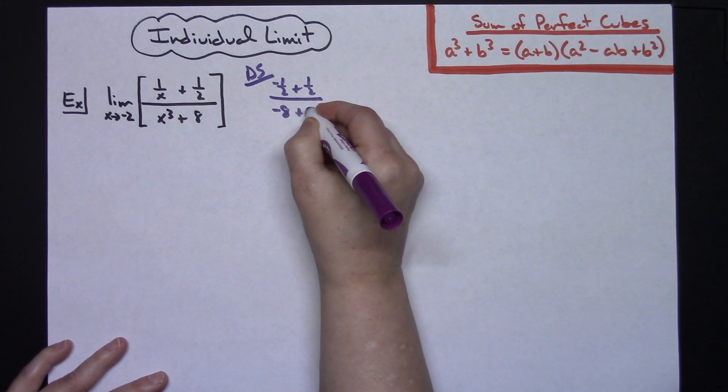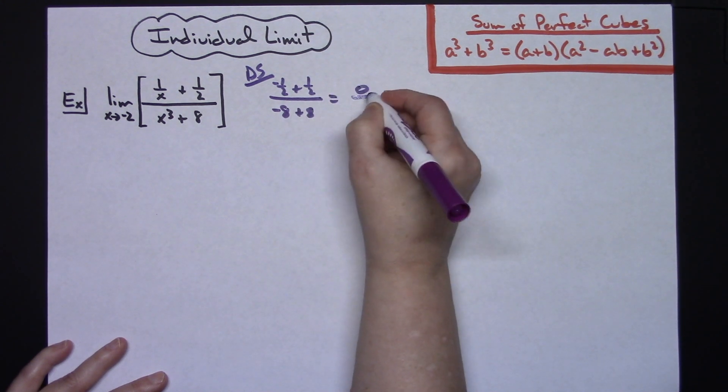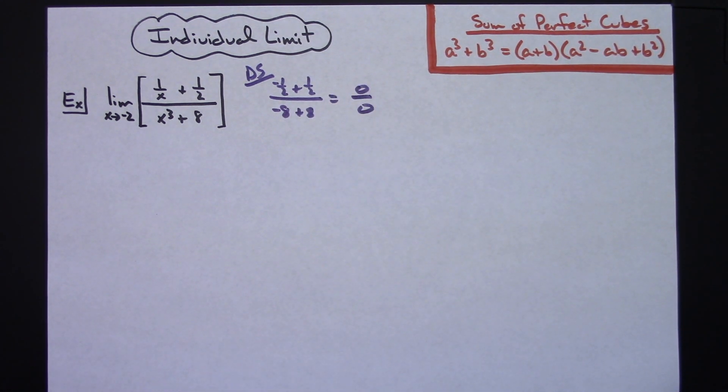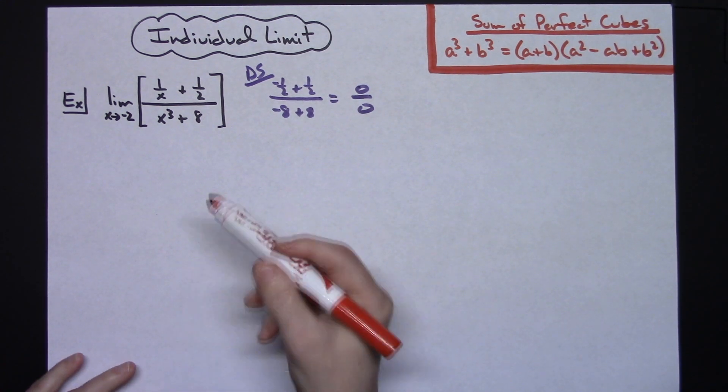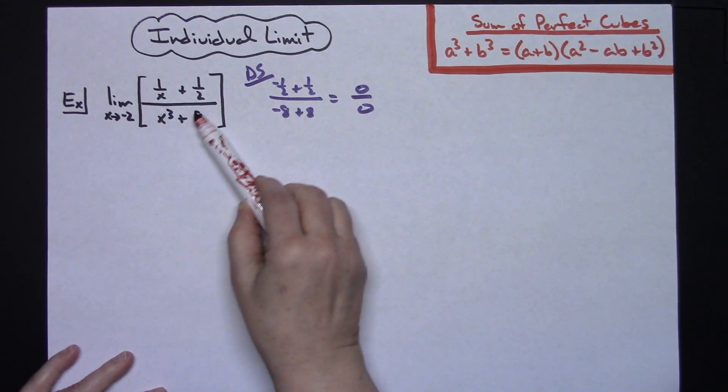If I plug in negative 2 here and cube it, I'll have a negative 8 plus an 8. In both cases that gives me that 0 over 0, which is that indeterminate form. Once you get that, then that means that you need to do something else to solve your limit.